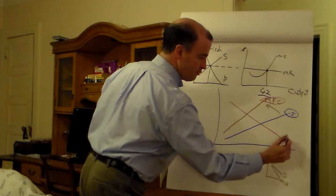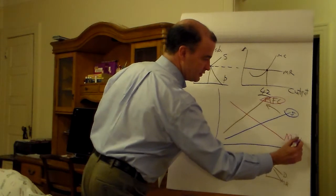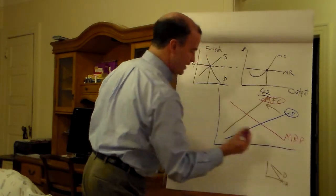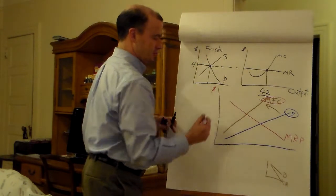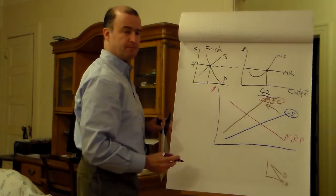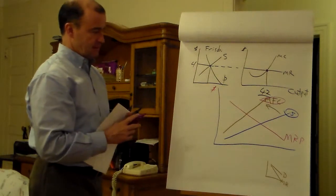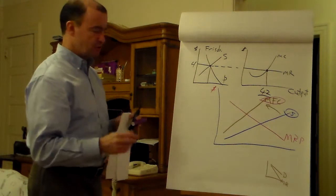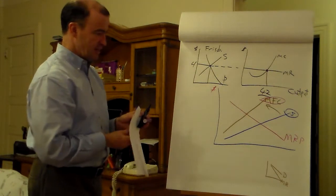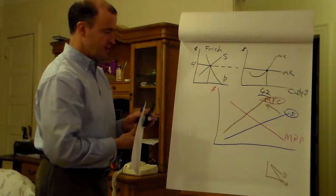I draw in a marginal revenue product, just in an abbreviated sort of form, just to convey the downward-sloping demand idea of marginal revenue product.